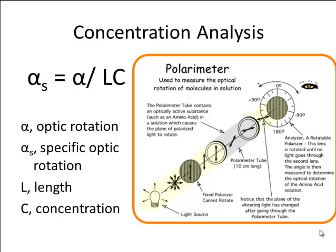We use something known as a polarimeter, which measures the optical rotation of molecules in solution. The formula is α = [α]lc, where α is the optical rotation — how many degrees the polarized light has been rotated — [α] is the specific optical rotation, l is the length the light travels through the substance, and c is the concentration. If I know the optical rotation, the specific optical rotation, and the path length, I can calculate the concentration as the only remaining unknown.